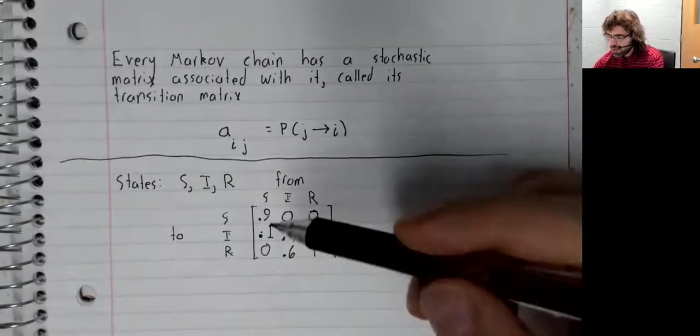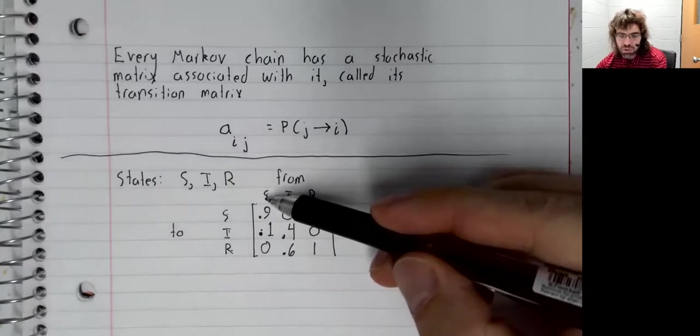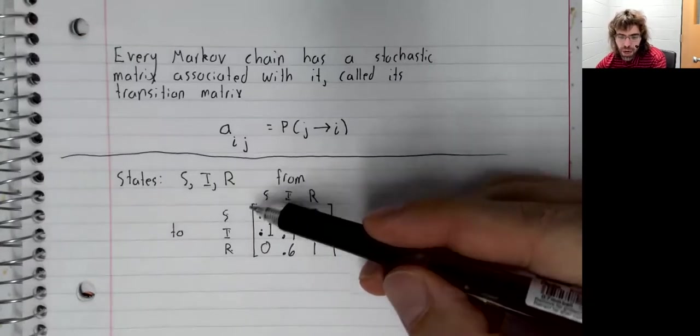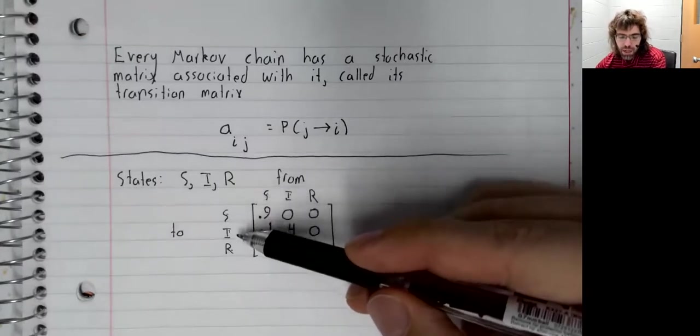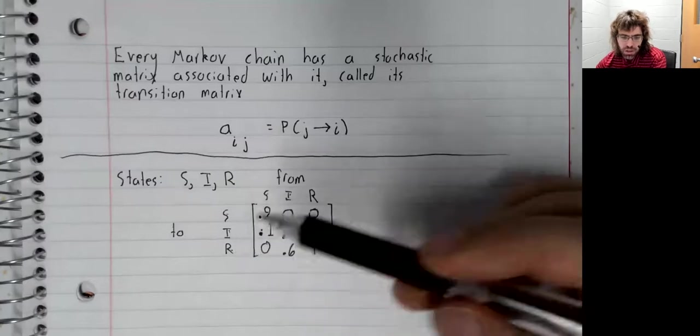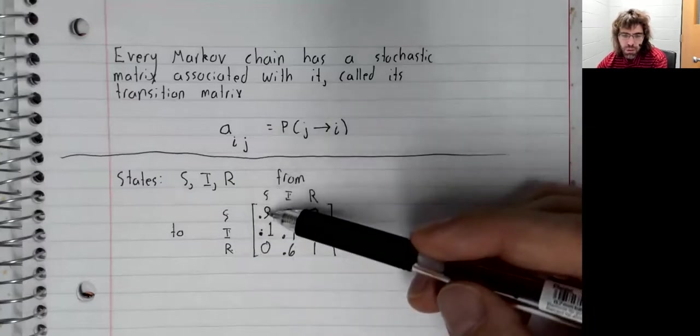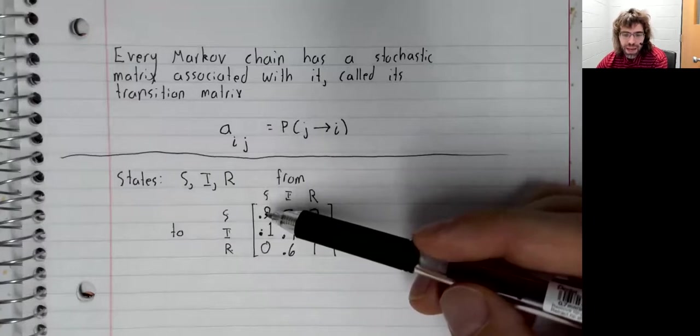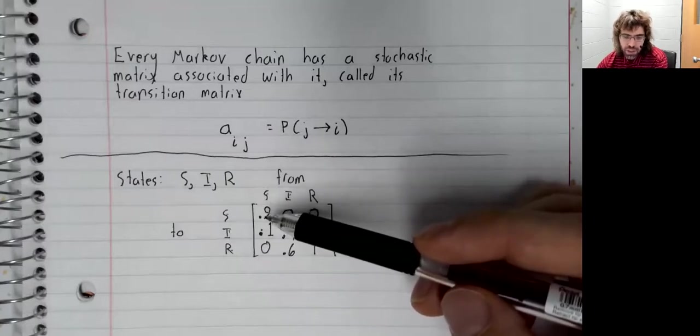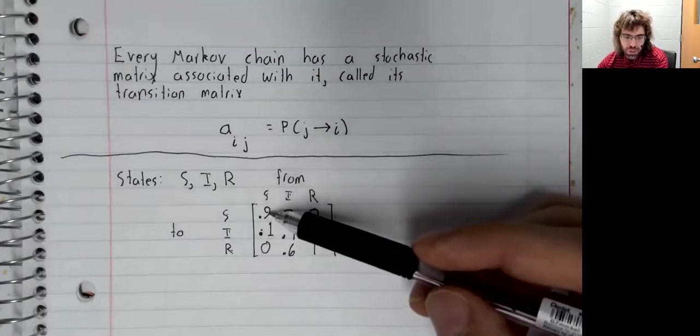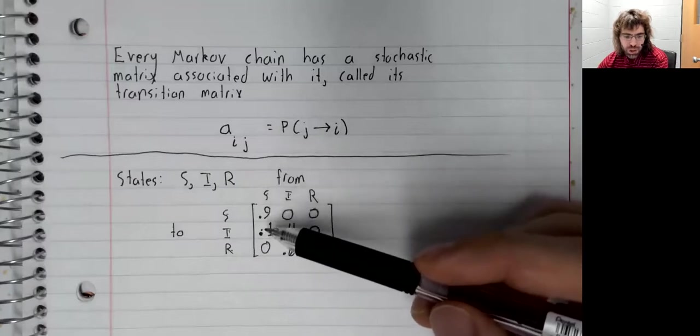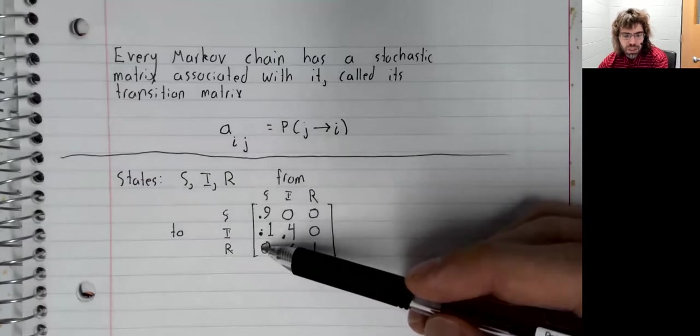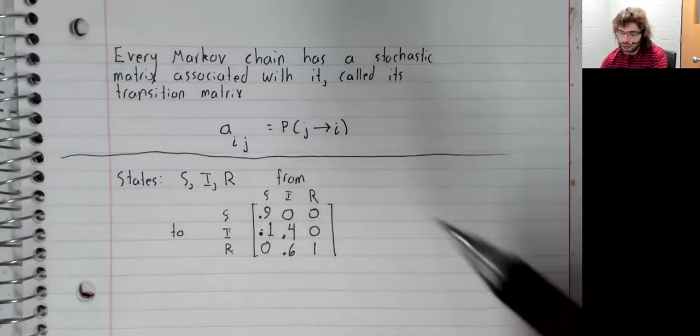All of the columns add up to one. Well, if we're in S, we have to go somewhere, either S or I or R. So the probability that we go somewhere is one. The probability that we go to S plus the probability that we go to I plus the probability that we go to R.